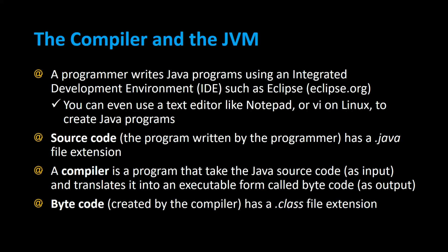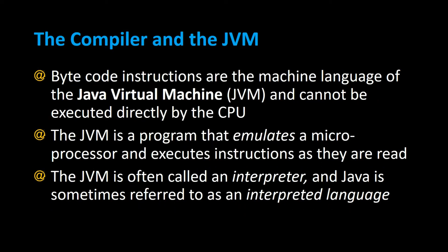Bytecode is created by the compiler and has a .class file extension. Bytecode instructions are the machine language of the Java virtual machine and cannot be executed directly by the CPU. You can only run a Java program on a device that has a JVM — a Java virtual machine. The JVM is a program that emulates a microprocessor and executes instructions as they are read. It is often called an interpreter, and Java is sometimes referred to as an interpreted language.